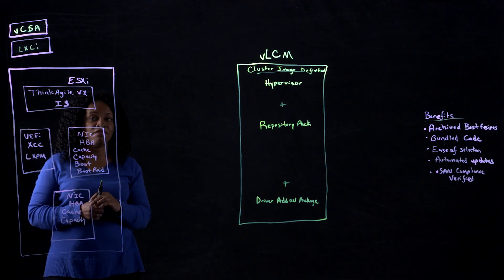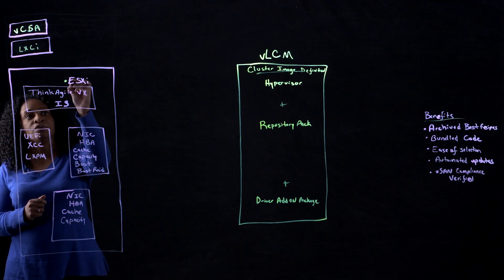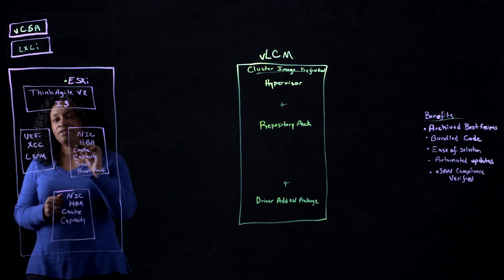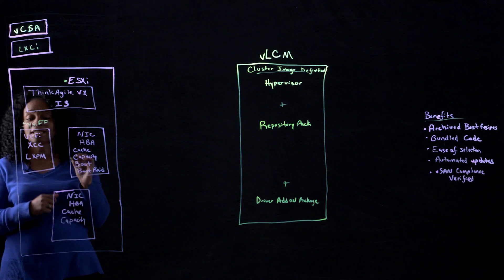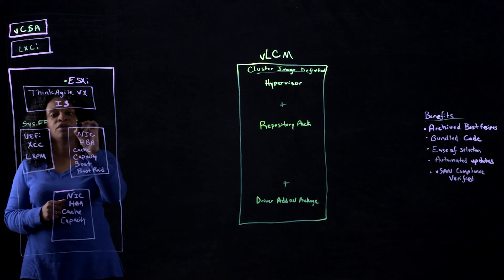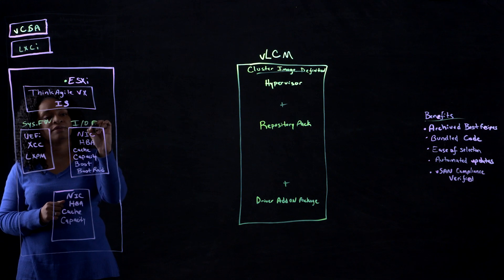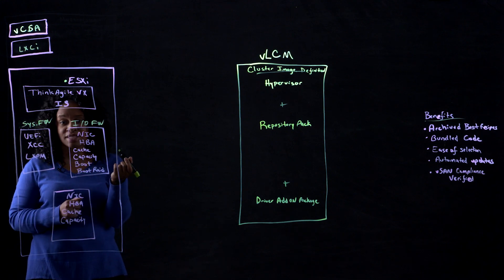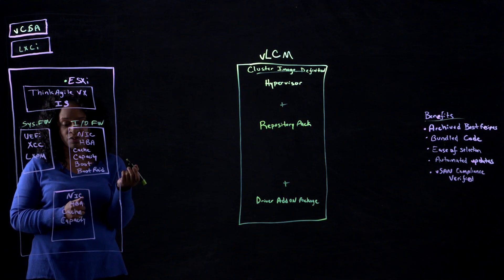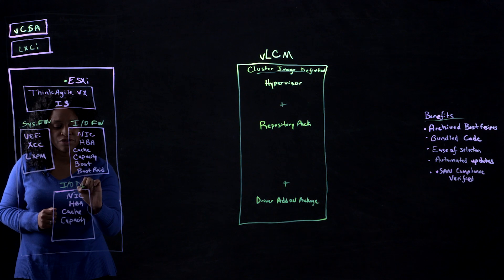For each of your ThinkAgile VX integrated systems, you have your hypervisor. We're using ESXi. Then you have your system firmware, so that's ESXi, XCC, and LXPM. Then we have our I/O firmware for the NIC, the HBA, the cache capacity and boot drives, and then your boot RAID. And then you have your I/O device drivers.